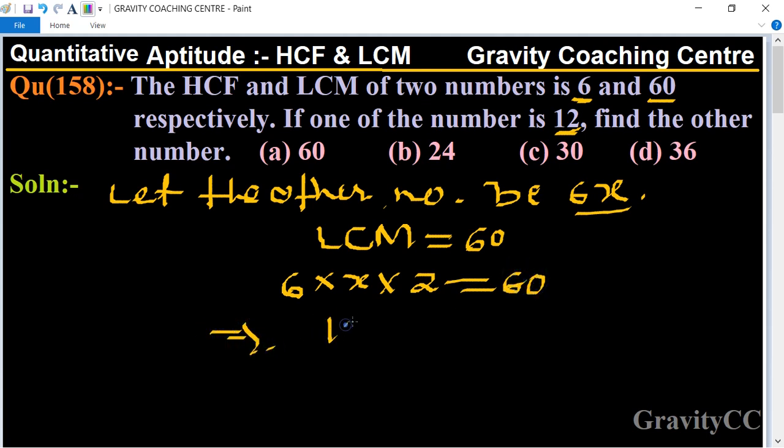This implies that 12x = 60. So x = 60 ÷ 12, which gives us x = 5.